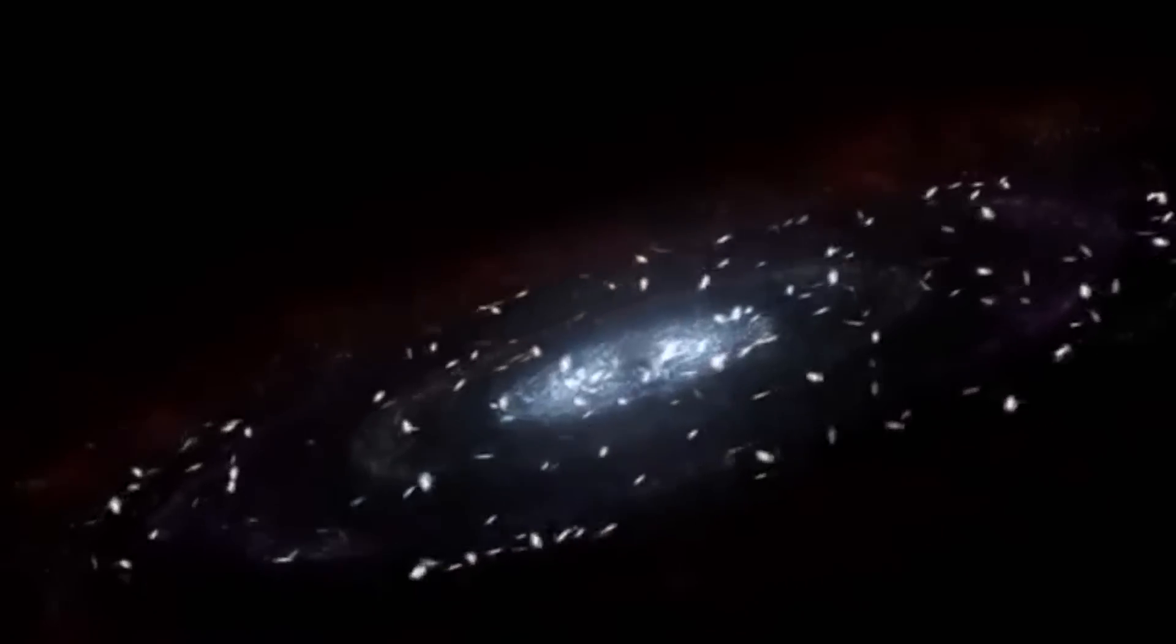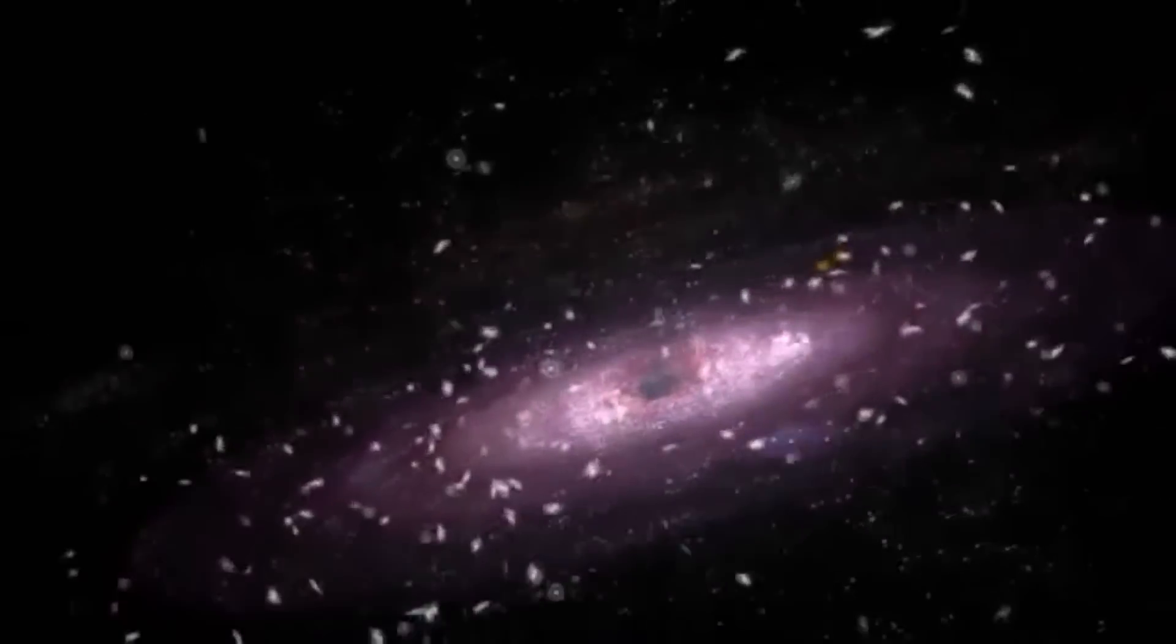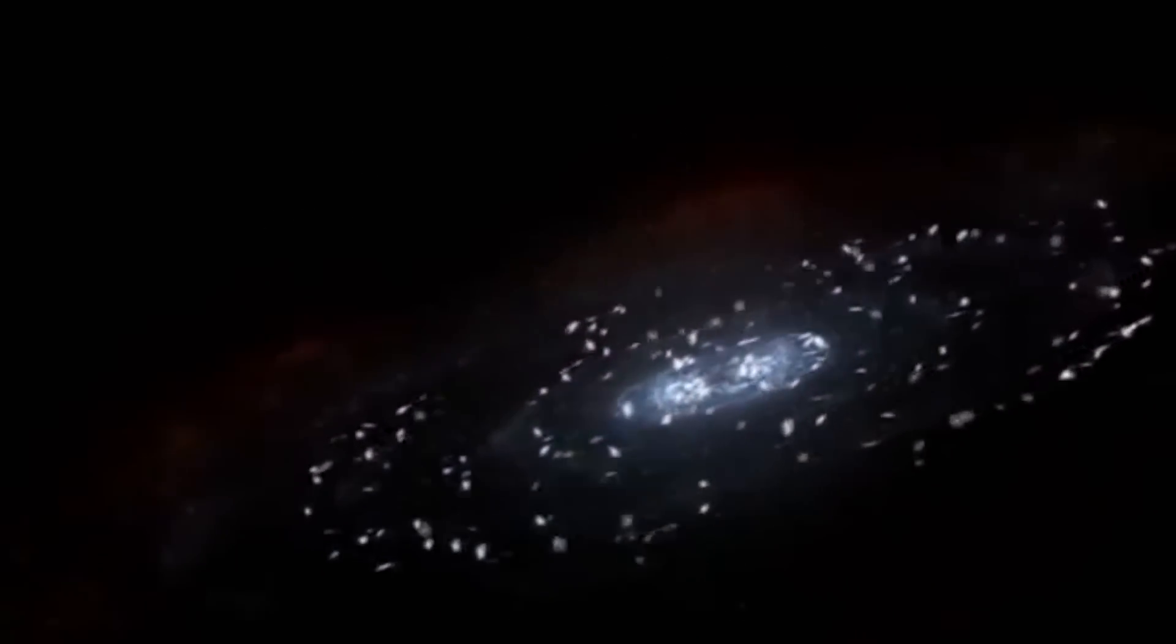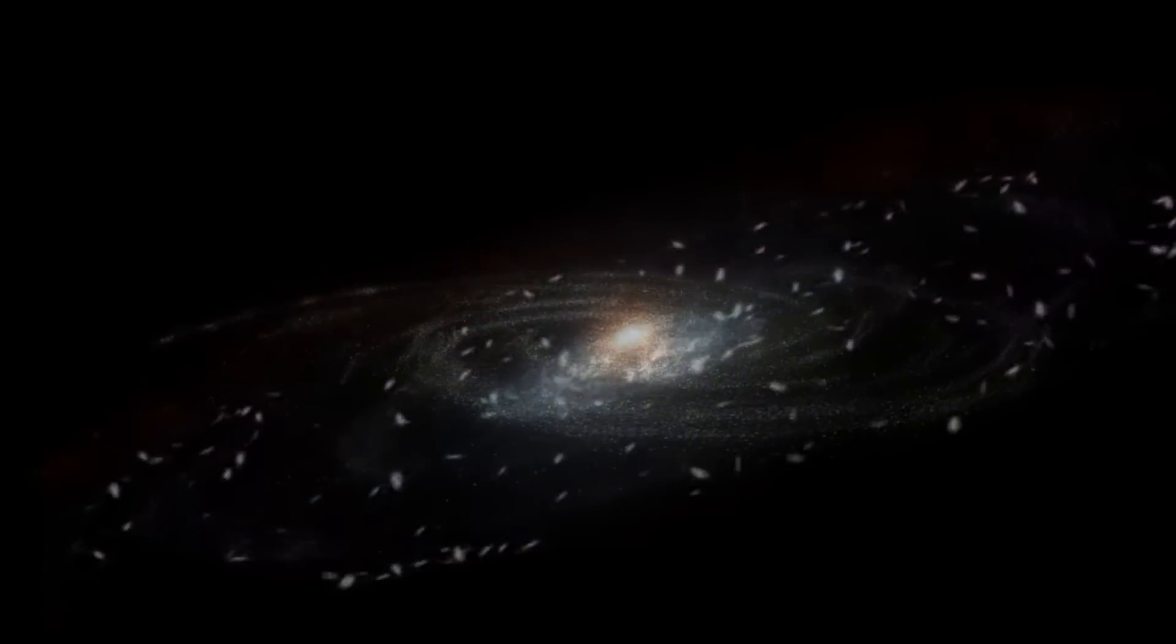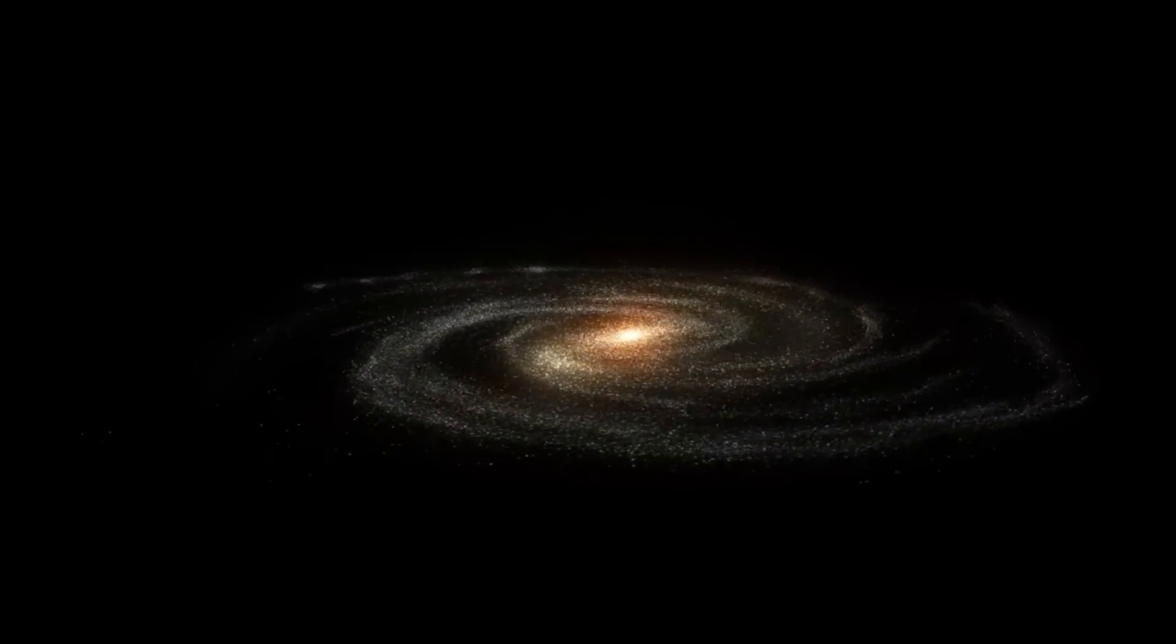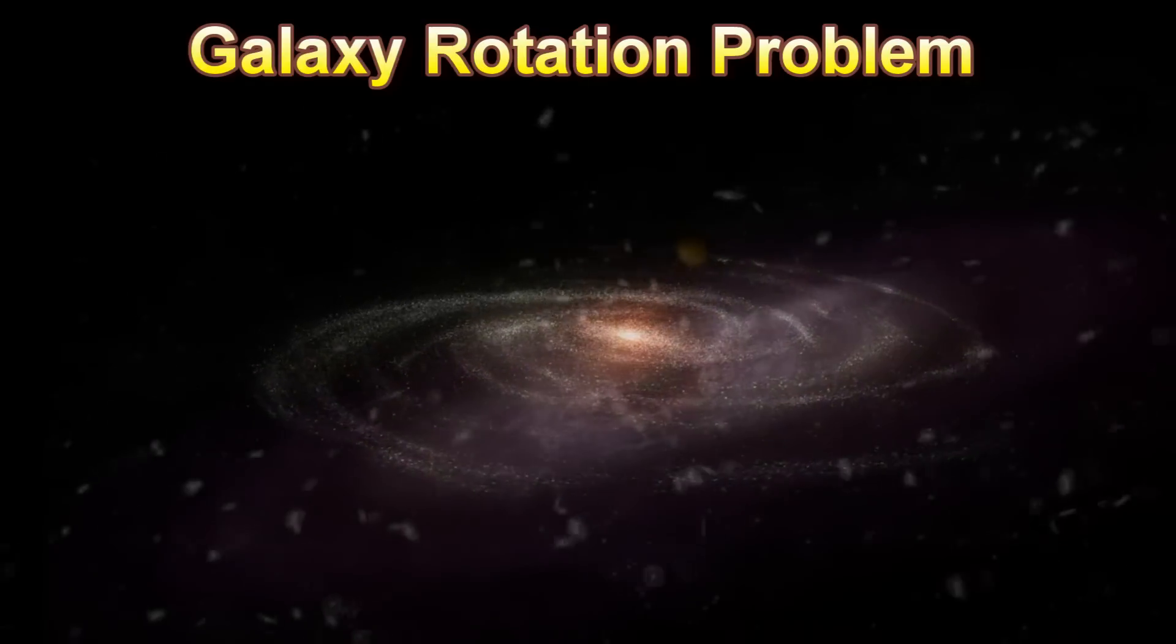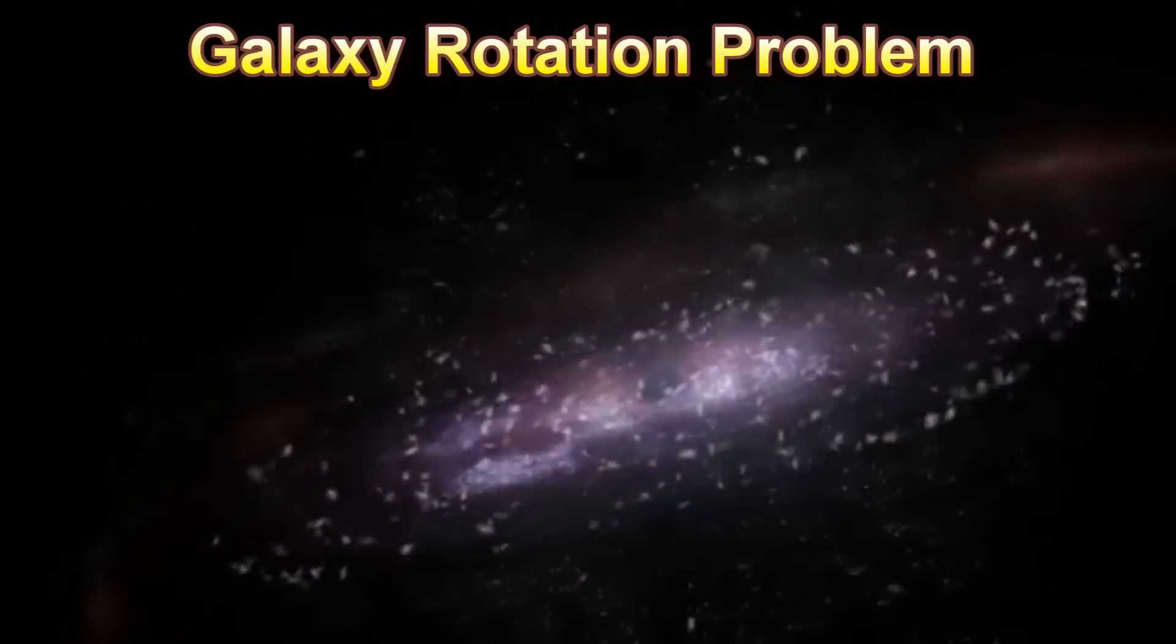It means that the stars on the outer edge have to travel at unbelievable speeds in order to keep in step with those on the inside. The astronomers refer to this phenomenon as the galaxy rotation problem. What would cause the stars on the outer edge to travel so fast?